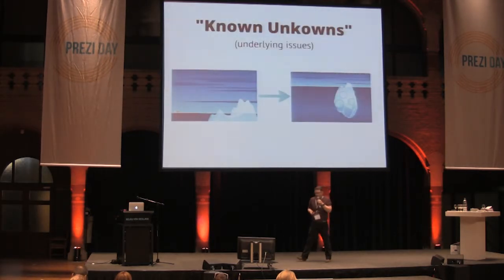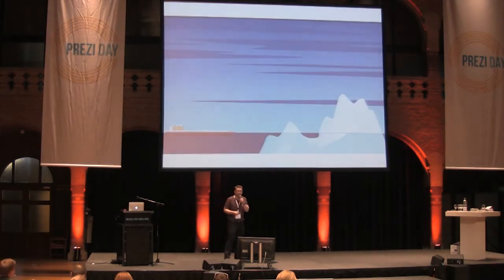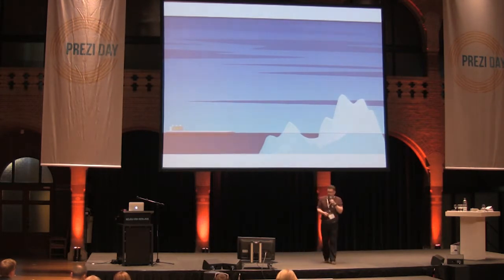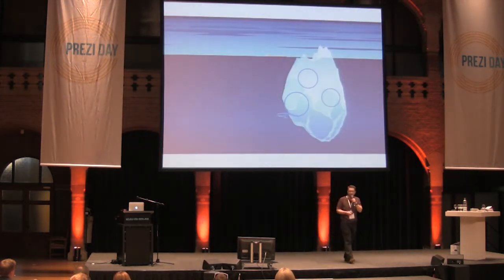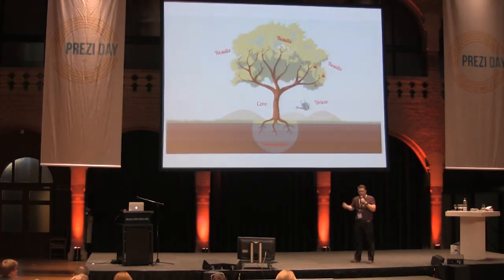Known unknowns is one of my favorite ones — it's about short underlying issues underneath. In Prezi you can start here and say 'this is what I think the problems are,' and then with a bit of zooming you can zoom out and reveal what the problems actually are. Simple metaphors like growth: we have the foundations, the drivers watering the roots of the core, and the results of the branches on the tree. Simple pictorial metaphors to help your audience understand quite abstract concepts.